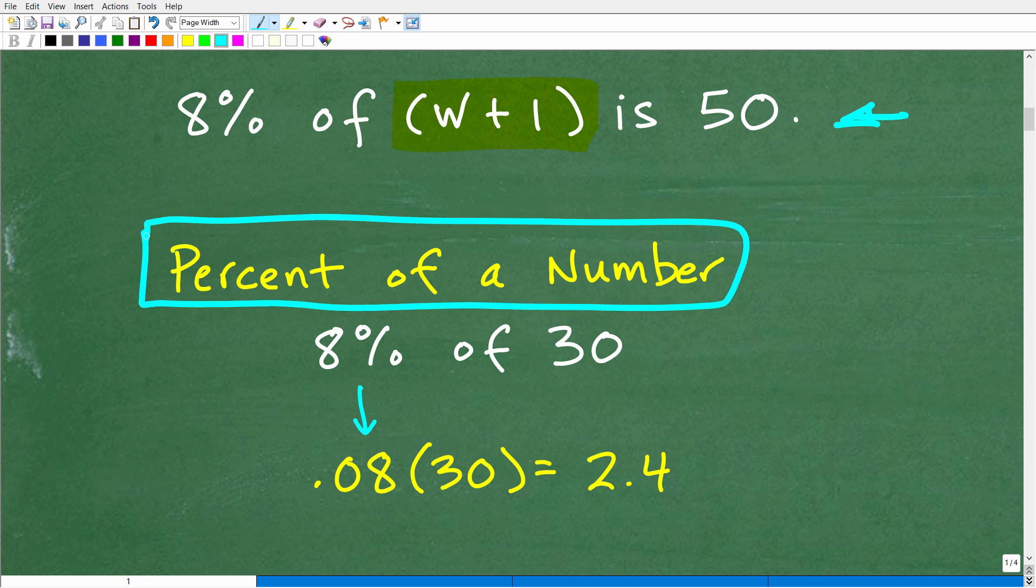So let's review how to find the percent of a number. Here's a simple example. If I wanted to find 8% of 30, how would you do this? Well, you would say you're going to change this percent to a decimal. I'm assuming most of you understand that. Of course, that's the first step. So we're going to change the percent to a decimal. Then we're going to multiply it by the number.